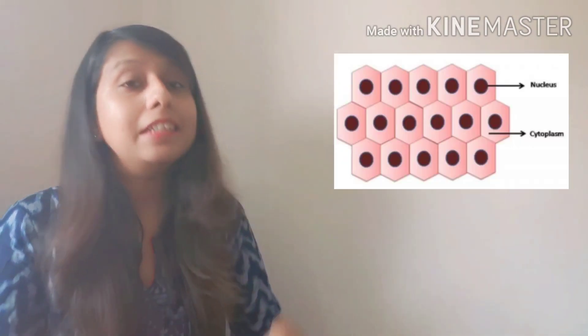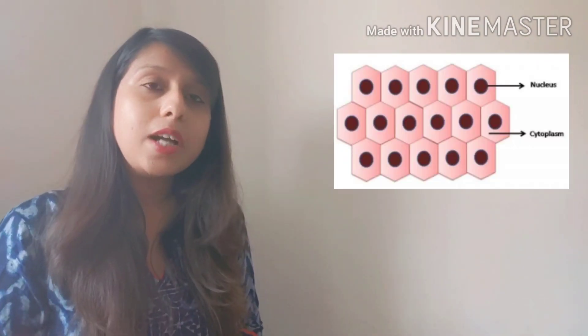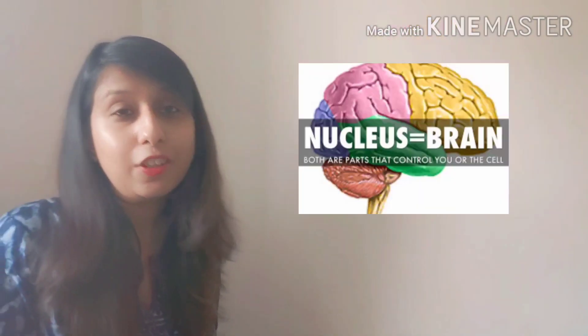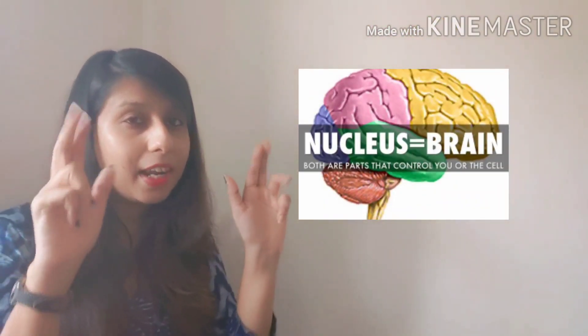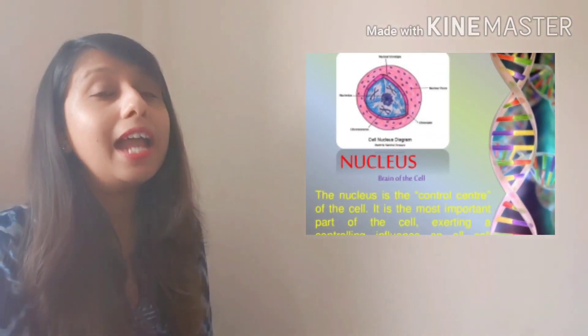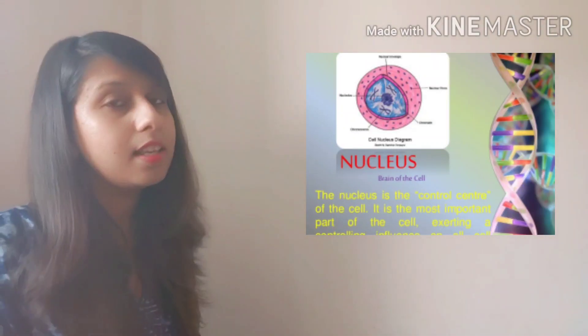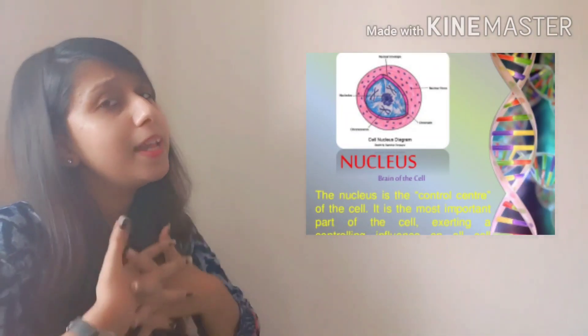Therefore, the cells of this tissue contain a big central nucleus. Nucleus is the brain of the cell because it contains the genetic material mainly. And during cell division, this nucleus is very important — it plays a very important role. The cells of this tissue are flat cells and they just keep on dividing.